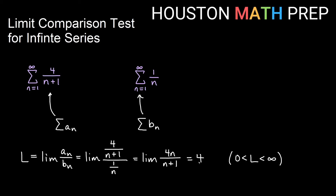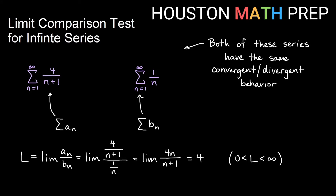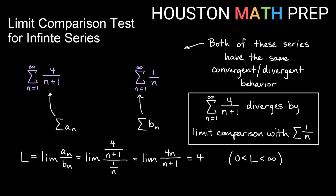Since we get a limit of four — a real number between zero and infinity — we know both of these are going to have the same type of behavior as far as converging or diverging. Since we know this is the harmonic series, a p-series with p equals one, it diverges. So this limit tells me that the original series also diverges by limit comparison to the sum of one over n.